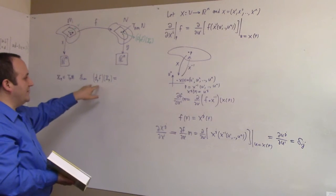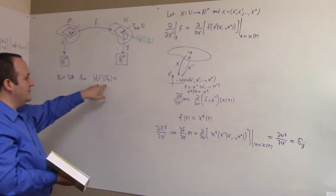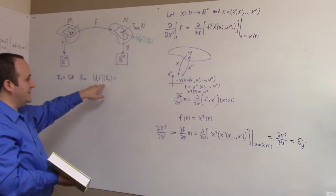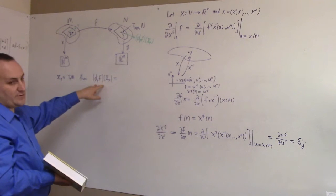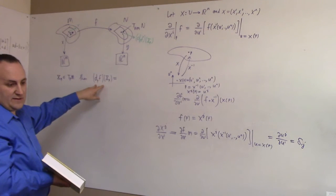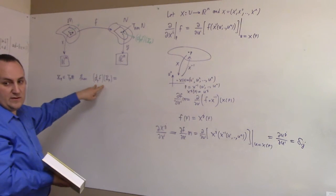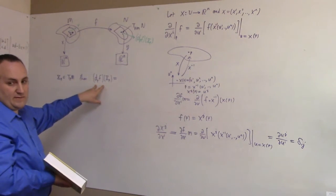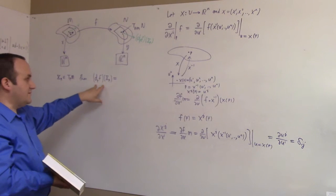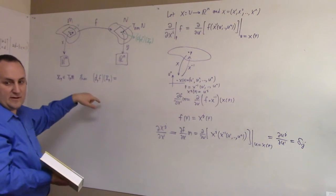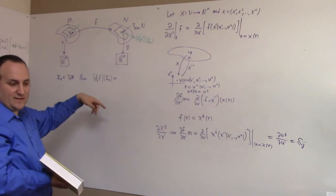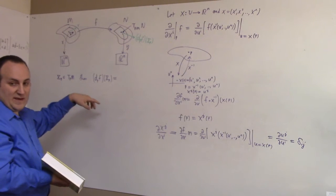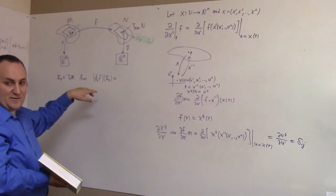Burying the point P, you might end up attaching — if F is going to the same point twice — you might end up attaching different vectors to the same point. So you'd start with a vector field, and if you sort of string these things together, you'd get something that attaches two vectors to a point, which is bad form for a vector field.